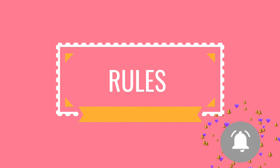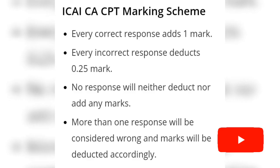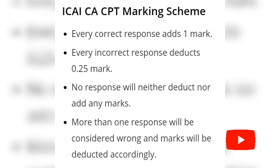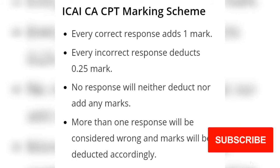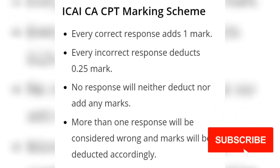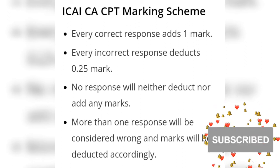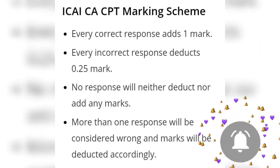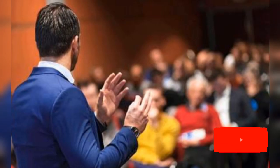Let's discuss some important rules of CPT. Every correct answer adds one mark. Every incorrect response deducts 0.25 marks — that is negative marking. No response will neither deduct nor add any marks. More than one response to a question will be considered wrong, as each question should have only one answer.